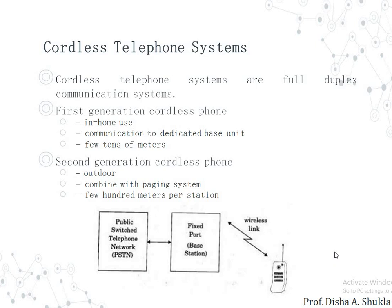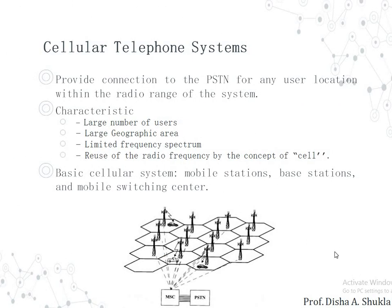The next system is the cordless system, which is a full duplex communication system. First-generation cordless phones are used in-home, communicating with a dedicated base unit within a few tens of meters. When a call is initiated from the MSC, it goes to the base unit, which is connected to the MSC via dedicated lines. Second-generation cordless phones can be used outdoors, combining paging functionality and providing communication for a few hundred meters per station.